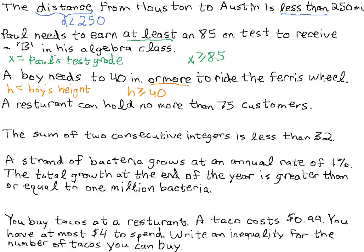A restaurant can hold no more than 75 customers. We label variable C as the number of customers. For this restaurant, C can be no more than 75 — it can be 75, so we have an equal sign, but we're also talking about all values less than 75. That will be safe for the restaurant — considering fire hazard or similar concerns — so C ≤ 75. It's safe to have up to 75 customers.